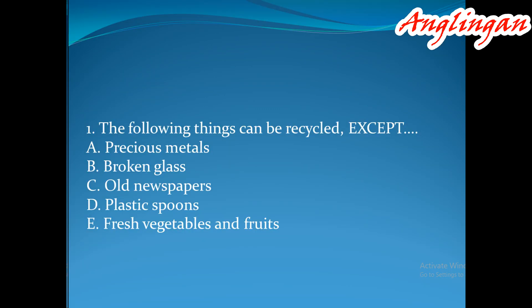Question number 1: The following things can be recycled, EXCEPT — A. Precious metals, B. Broken glass, C. Old newspapers, D. Plastic spoons, E. Fresh vegetables and fruits.